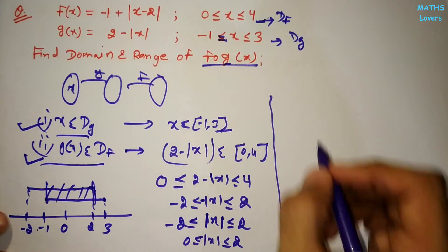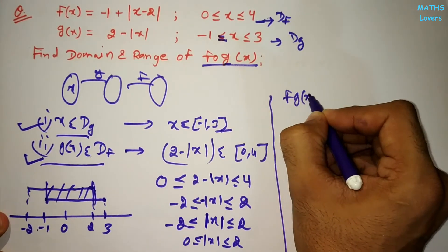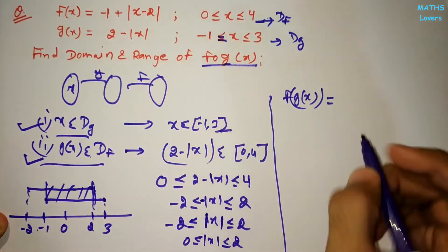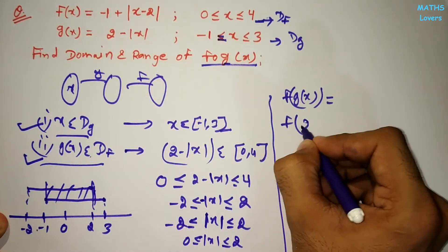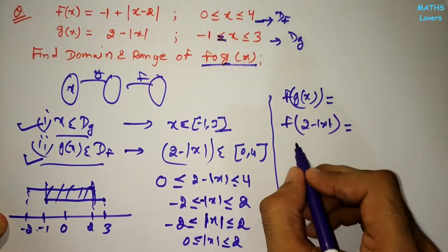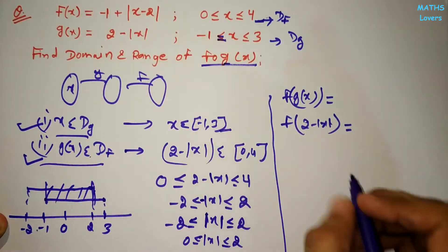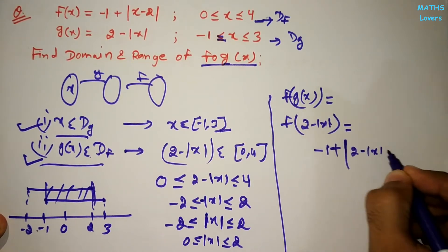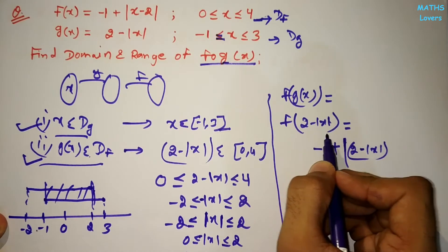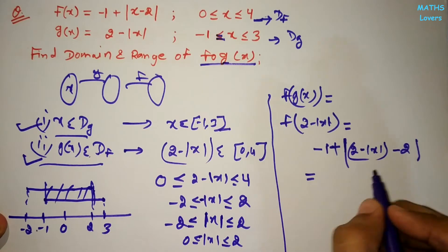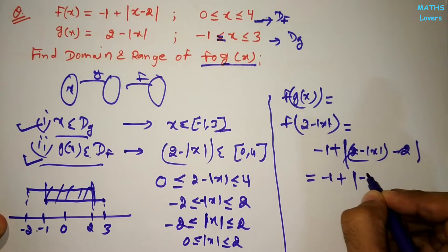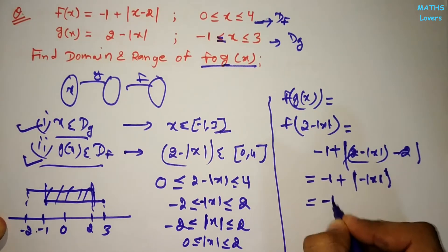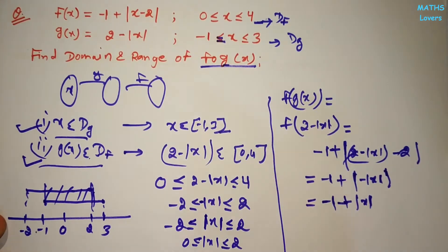Now let's find the range. We first find f(g(x)). In f(x) = -1 + |x - 2|, we replace x with g(x) = 2 - |x|, giving -1 + |(2 - |x|) - 2|. The 2's cancel, leaving -1 + |-|x||. Since |-|x|| = |x|, we get f(g(x)) = -1 + |x|.